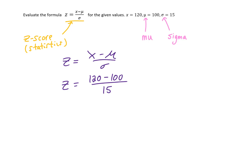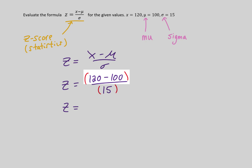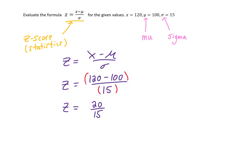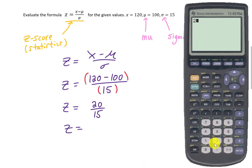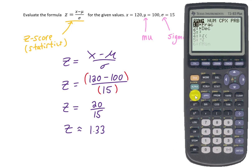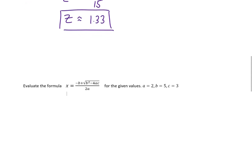For order of operations, any numerator and denominator technically have parentheses around them, so we simplify 120 minus 100 first to get 20. Then we divide 20 by 15. The calculator gives 1.333 repeating, and using the math button to convert to a fraction gives four-thirds. An answer rounded to two decimal places is acceptable here.